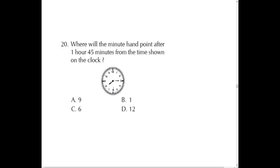Question number 20: where will the minute hand point after 1 hour 45 minutes from the time shown on the clock, which is 8:15? After 1 hour it will be 9:15, and after 45 minutes more it will be 10:00. At 10 o'clock, the minute hand will be pointing towards number 12.